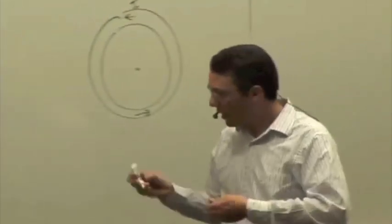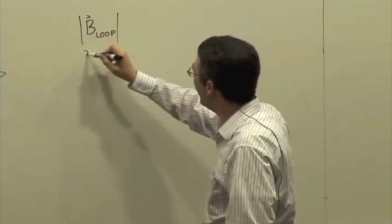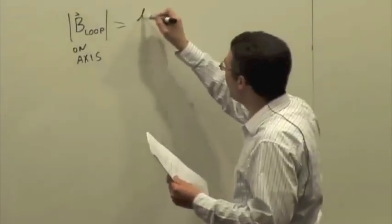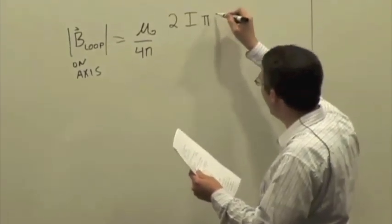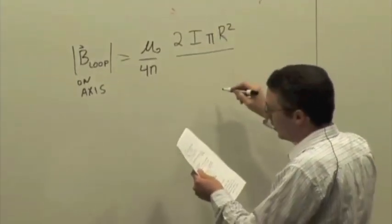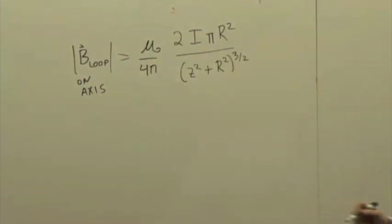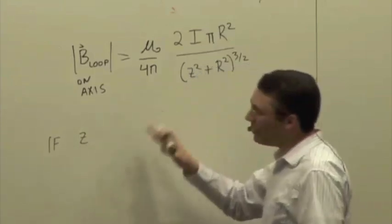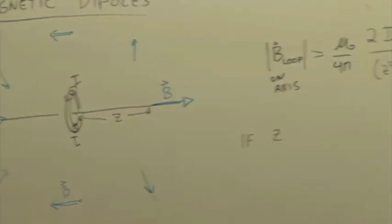So we worked this out. We found a formula for this. The magnetic field of a loop on that center axis - on the axis that goes through the center of the loop - that magnitude was μ₀/4π × 2IπR²/(z² + R²)^(3/2), with z being the distance from the center to some observational location along that center line.